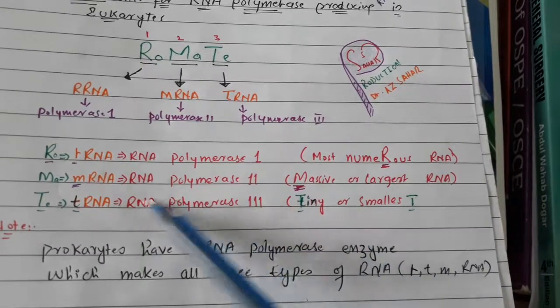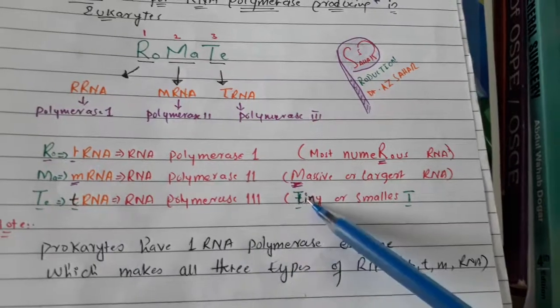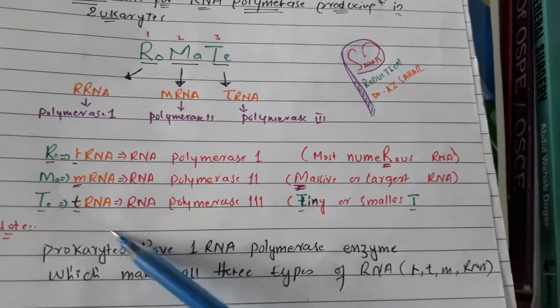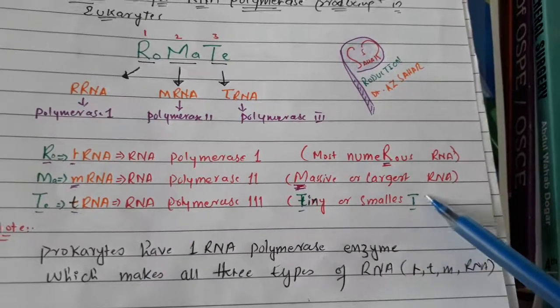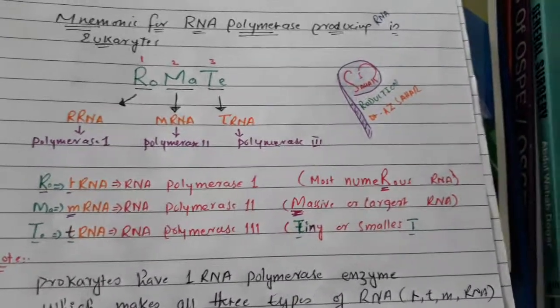M is for massive and largest RNA, that is mRNA. T is for tiny RNA or tRNA, you can also say smallest. In smallest you see the last T word, so the smallest RNA is tRNA. Just remember the mnemonic ROOMATE.